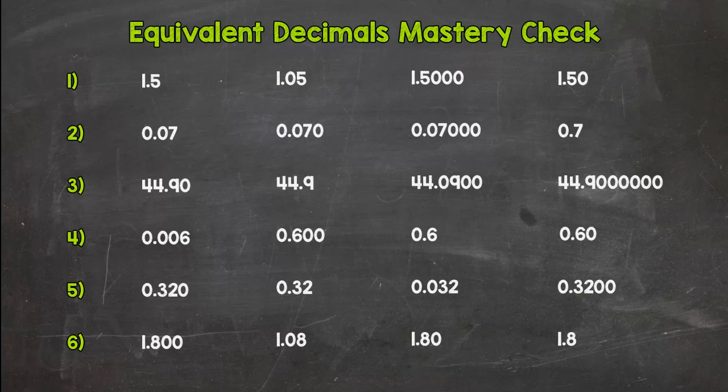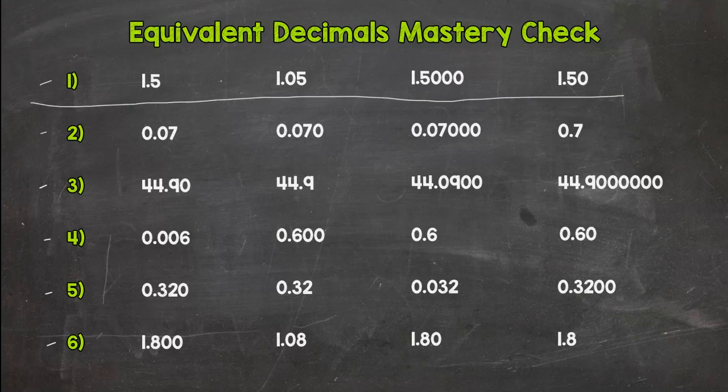So if you're ready for the mastery check, here's what we're doing with this one. As you can see, we have six numbers down here and we have a row going across of four decimals. This is kind of like equivalent decimals mastery check. There's a list of four numbers there and we have to find the one that is not equivalent to the other three.